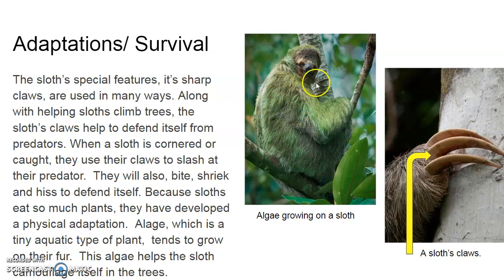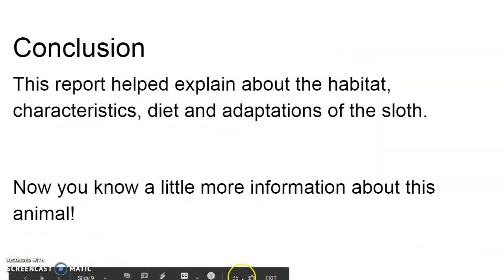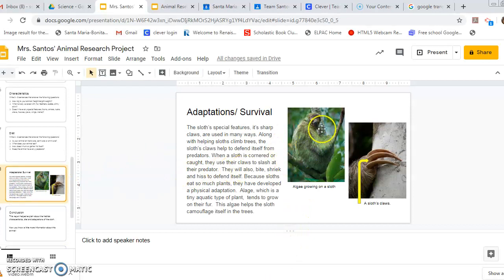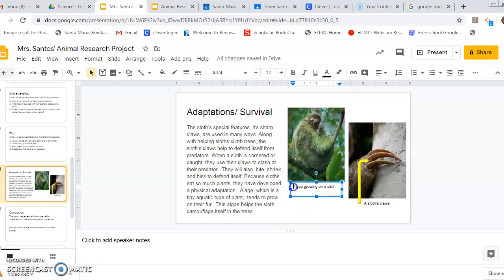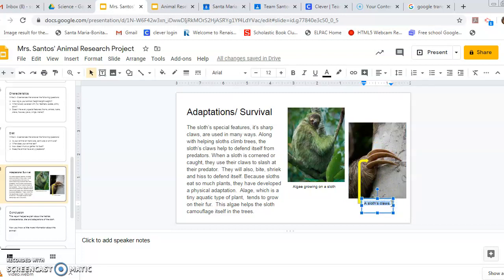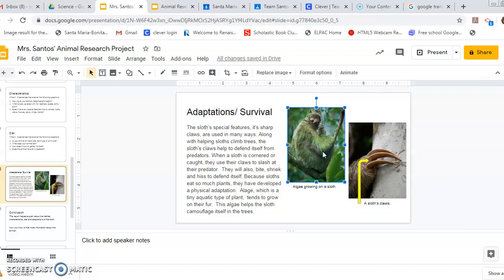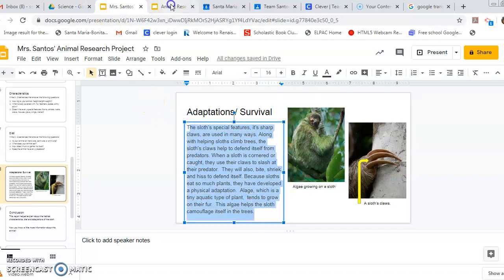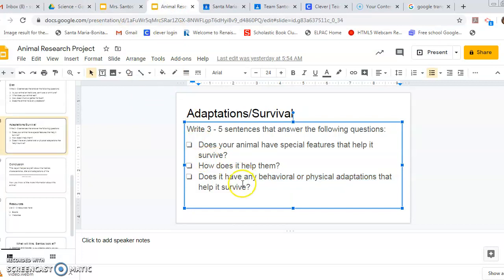I've added two pictures here: a picture of the sloth with the algae, and I even wrote a caption to describe what the picture is about. Then I did a close-up picture of a sloth's claws and added a diagram with a caption. You can do the same thing as well, but if you cannot find the pictures yet or you want to save the diagram and picture for last, that's fine too. You don't have to necessarily finish all of this today. You might just want to do the research first.